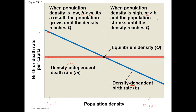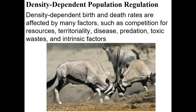So mortality is higher than birth rate — that is density dependent population regulation. It matters whether you have very few organisms or lots of organisms.